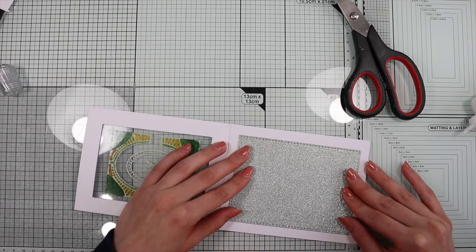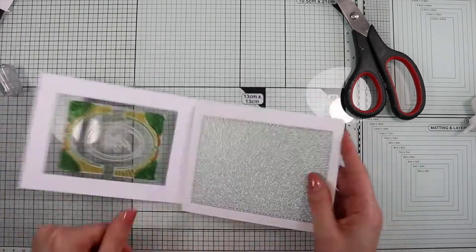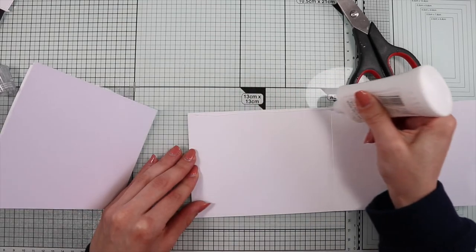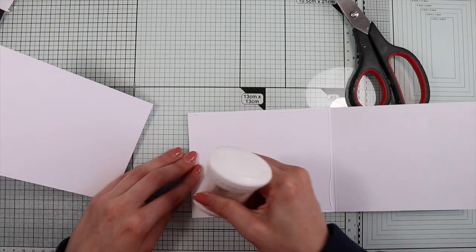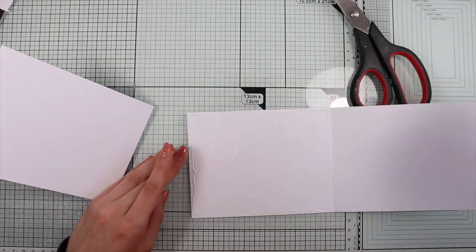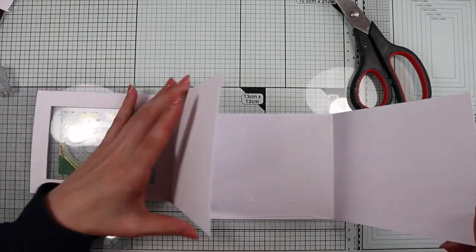After that I glue the two cards to form the trifold card, applying the glue on the underside of the inner card that I glue on the back of the first card.